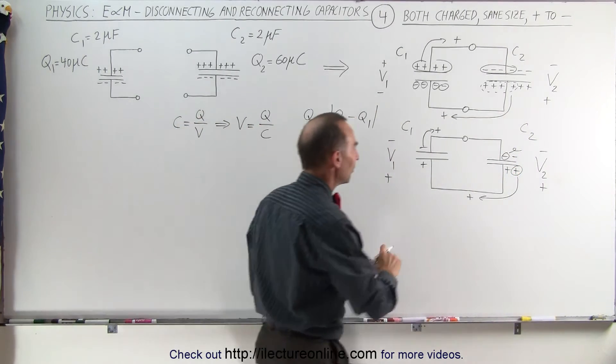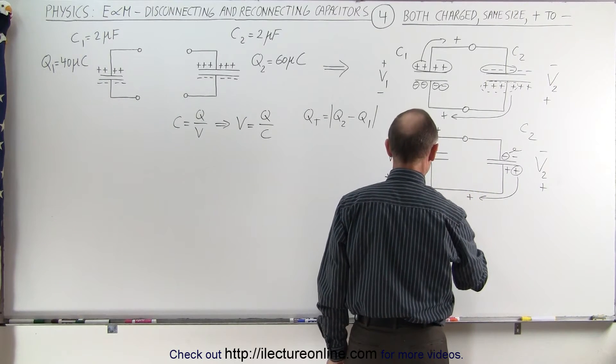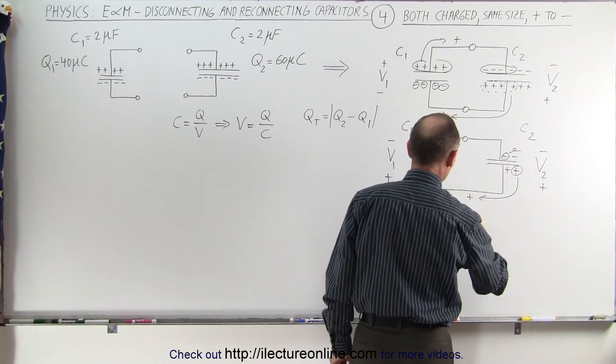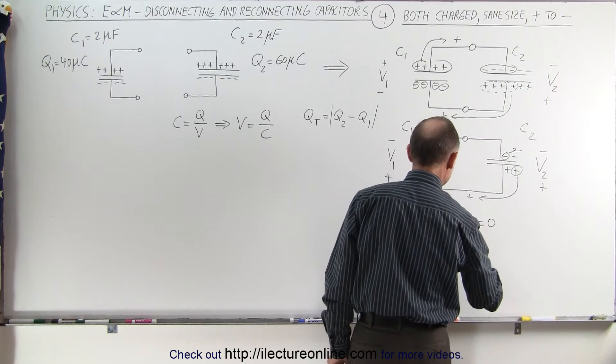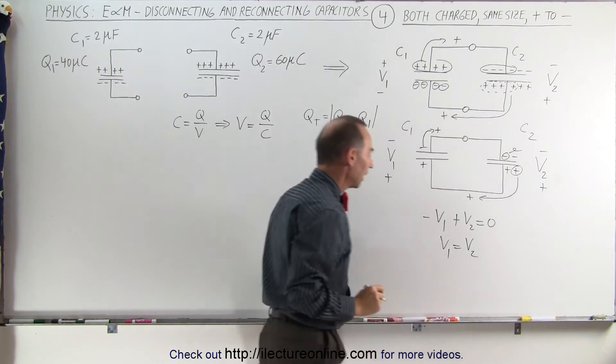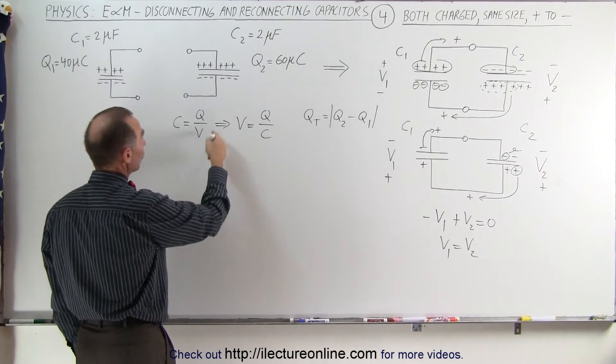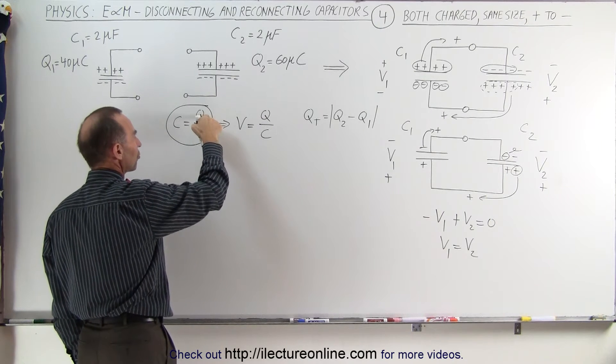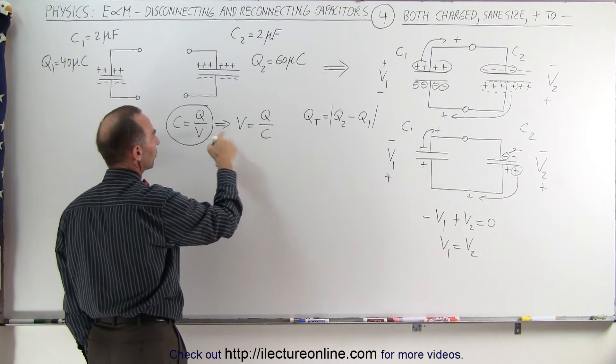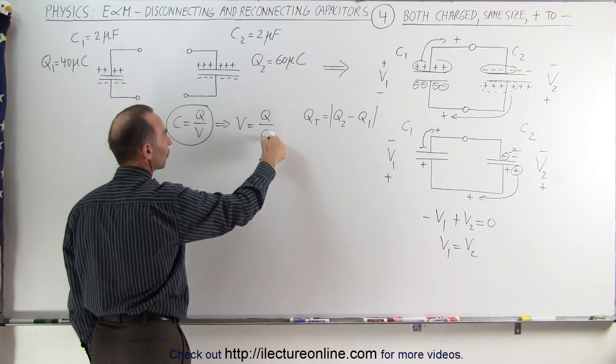If we add up all the voltages, we have -V1 + V2 = 0. In other words, V1 = V2. Using the definition of capacitance, the capacitance is the ratio of charge divided by voltage. Solving this equation for voltage, we get Q over C.